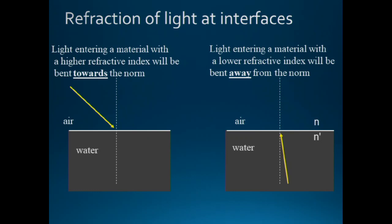When light rays enter a material with a higher refractive index — for example, traveling from air into water — the light ray is going from a less dense into a more dense medium. When that happens it gets bent towards the normal. The normal is an imaginary line perpendicular to the two surfaces used to determine whether light rays bend toward or away from it.